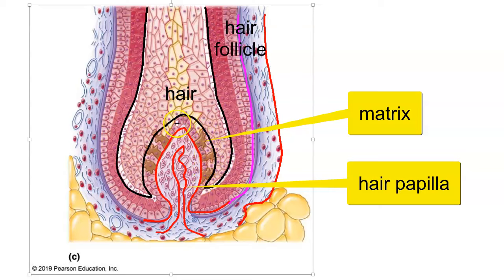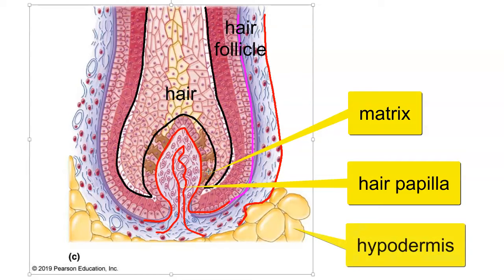The matrix is an area of rapid mitosis, very similar to the skin itself — at the very bottom of the structure, close to the blood supply, active cells rapidly divide by mitosis and produce the hair. We can see melanocytes within the matrix, and the melanocytes do the same thing as in skin: they produce a pigment and inject it into the keratinocytes to give the hair its color. Also in this picture we can notice the hypodermis — the adipose tissue.